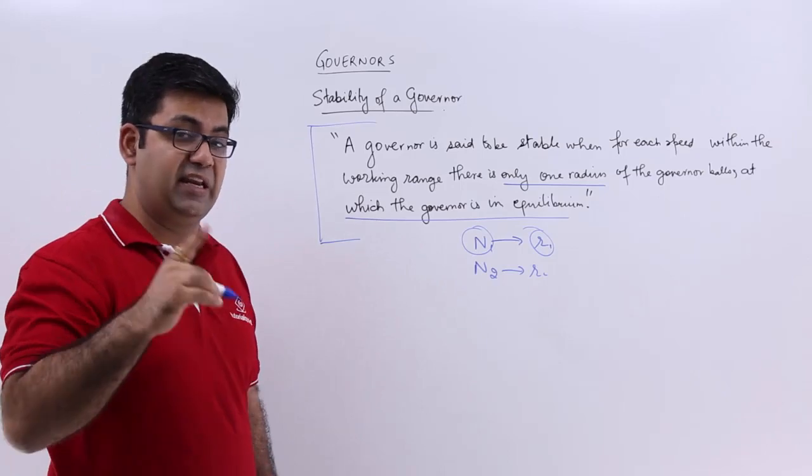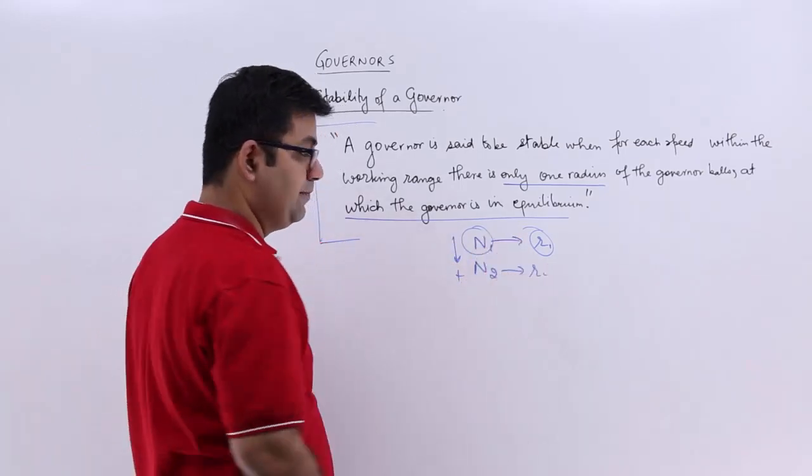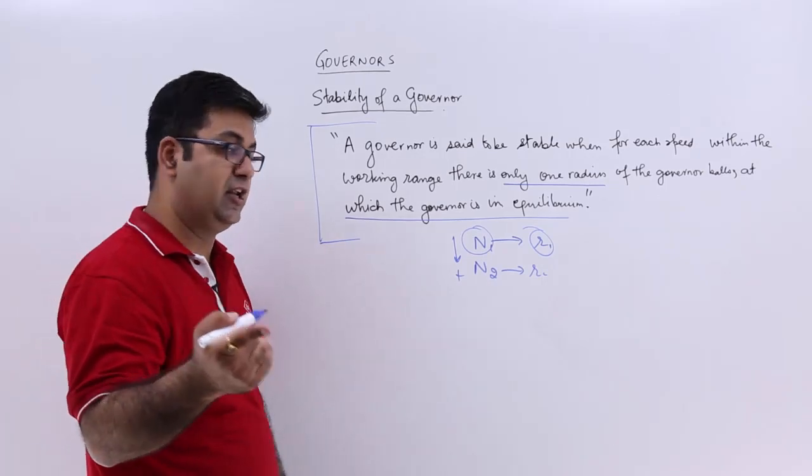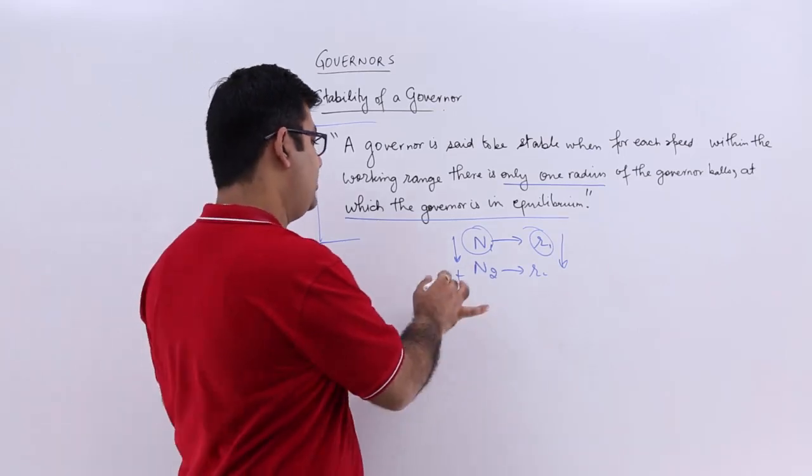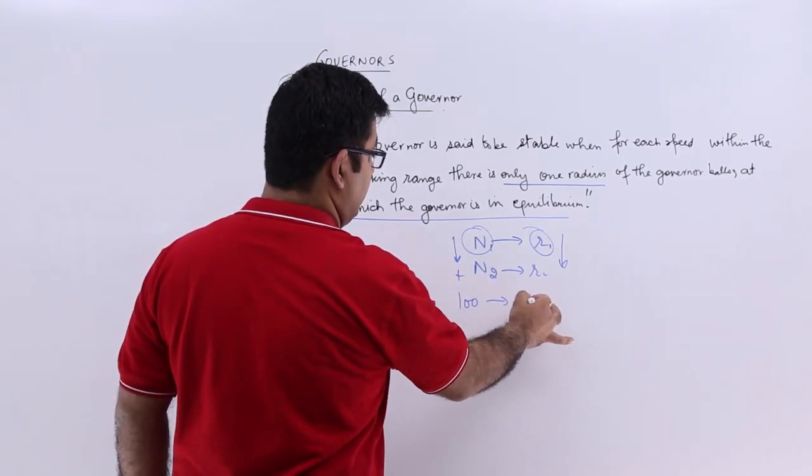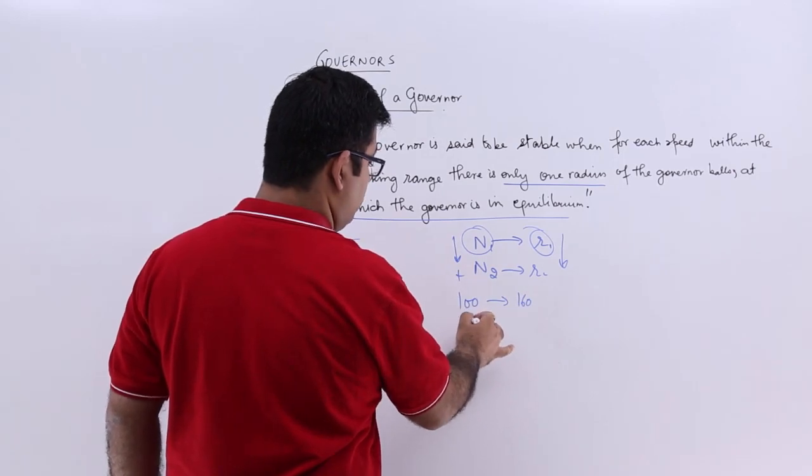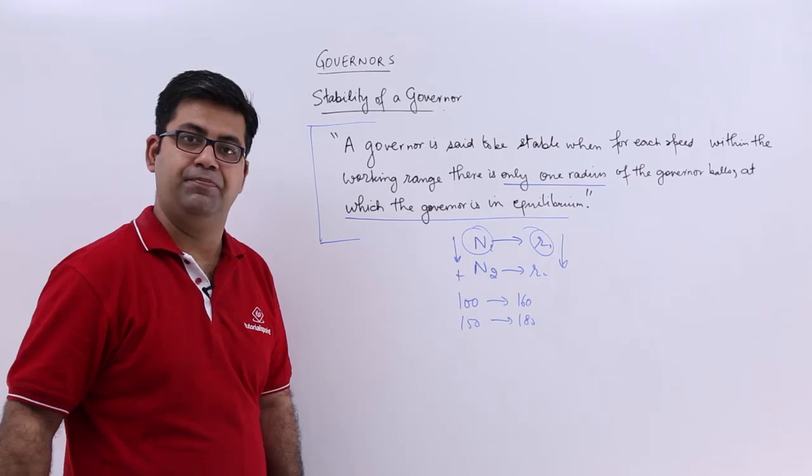And if your governor is stable, then as the speed of rotation increases, so will the radius of rotation. So let's say if this is initially going at 100 rpm and the radius of rotation is 160, if it goes to 150, this will increase to let's say 180.